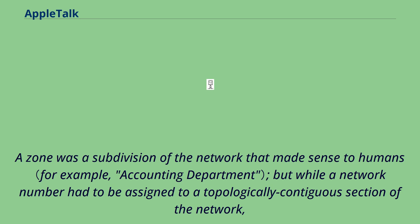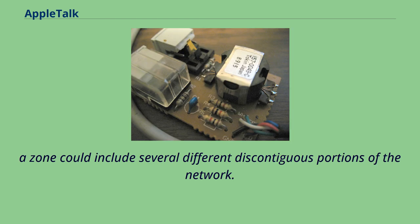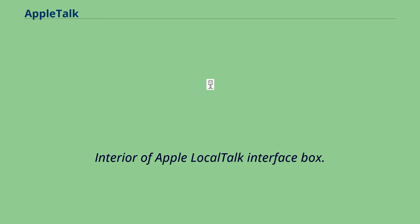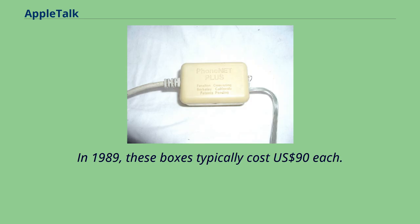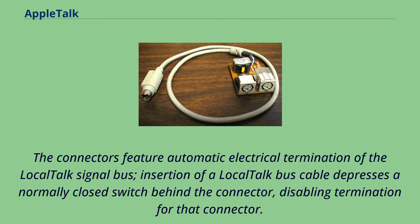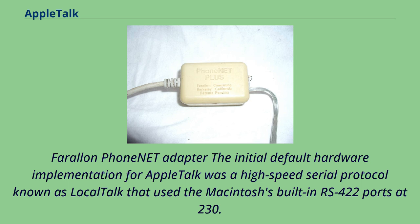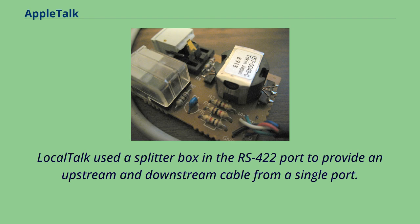In 1989, LocalTalk connector boxes typically cost US$90 each. The connectors feature automatic electrical termination of the LocalTalk signal bus; insertion of a LocalTalk bus cable depresses a normally closed switch behind the connector, disabling termination for that connector. The initial default hardware implementation for AppleTalk was a high-speed serial protocol known as LocalTalk, using the Macintosh's built-in RS-422 ports at 230.4 kilobits per second. LocalTalk used a splitter box in the RS-422 port to provide upstream and downstream cables from a single port. The topology was a bus, with cables daisy-chained from each connected machine to the next, up to the maximum of 32 permitted on any LocalTalk segment.